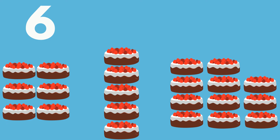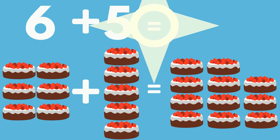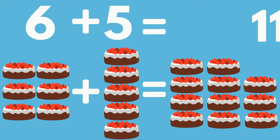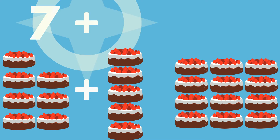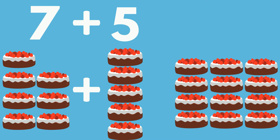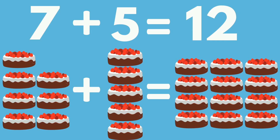6 cakes plus 5 cakes equals 11 cakes. 7 cakes plus 5 cakes equals 12 cakes.